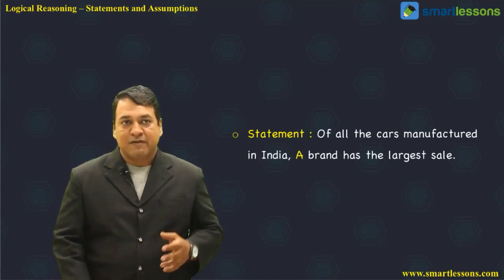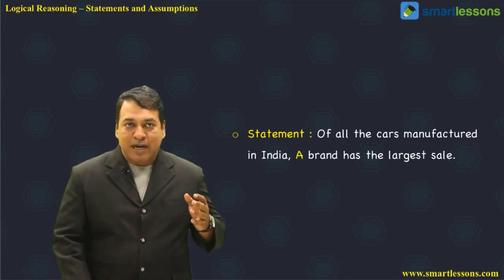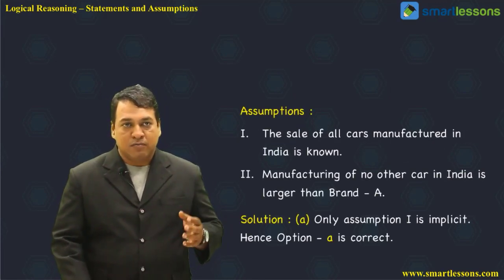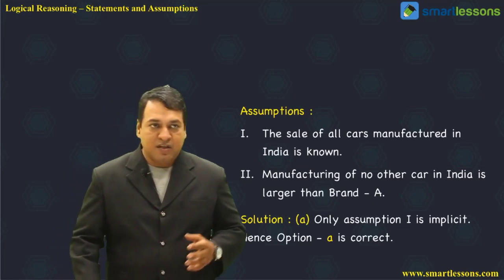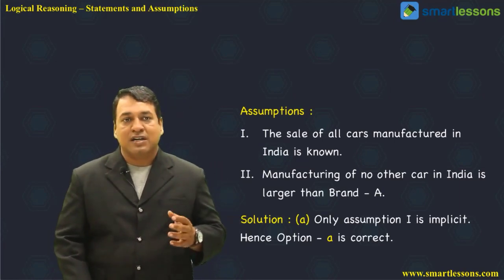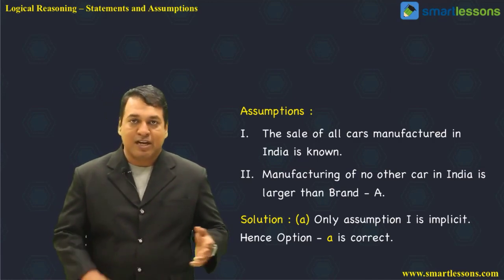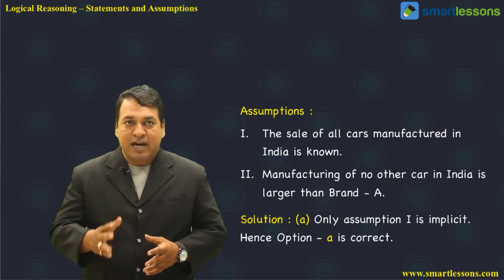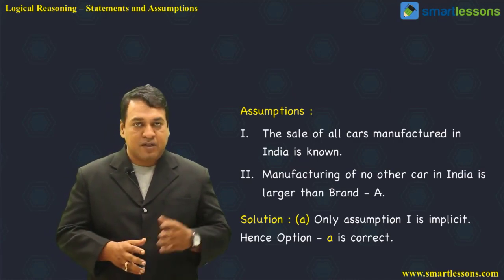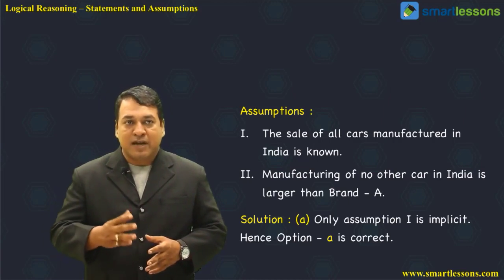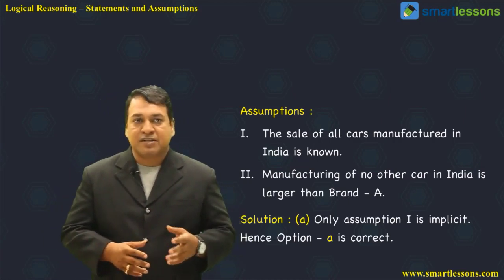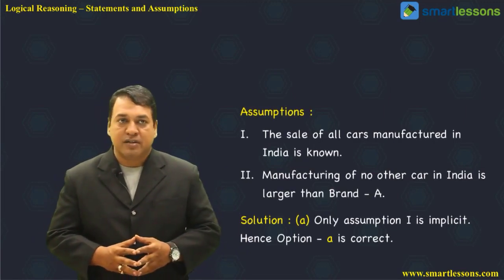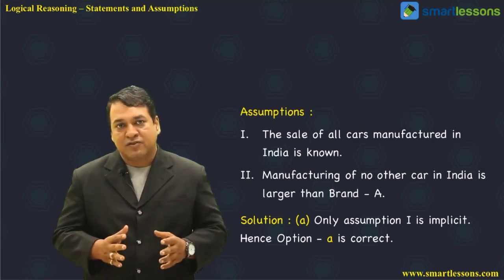The next statement is: 'Of all the cars manufactured in India, Brand A has the largest sale.' The assumptions are: one — the sale of all cars manufactured in India is known; two — manufacturing of no other car in India is larger than Brand A. From the statement it is easily assumed that Brand A has the highest sales in India and no other car has sales higher than Brand A.